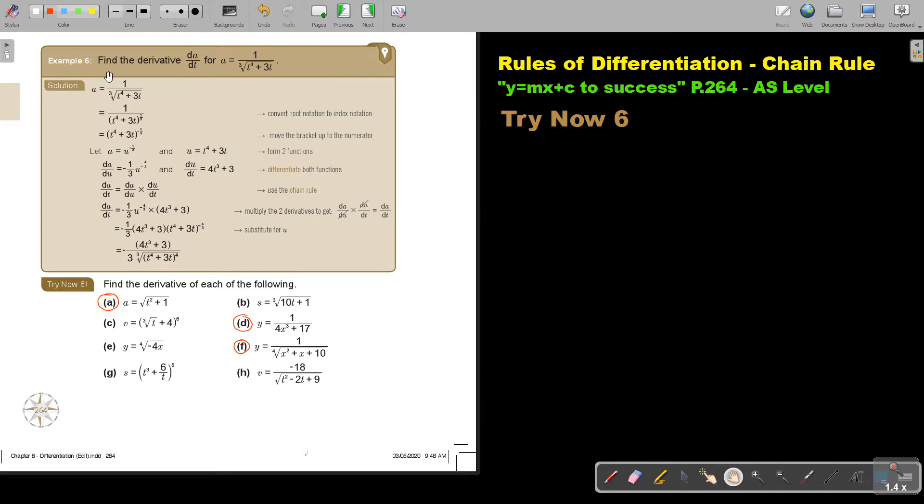Now let's look at a bit more advanced example. In the previous video we were looking at the chain rule, the basics and some basic examples. So find the derivatives of dA over dt. Can you see I changed the variables a little bit?